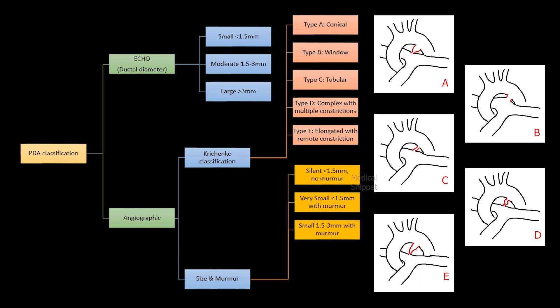Small PDA is 1.5 to 3 mm, moderate PDA is 3 to 5 mm, and large PDA is more than 5 mm in size.